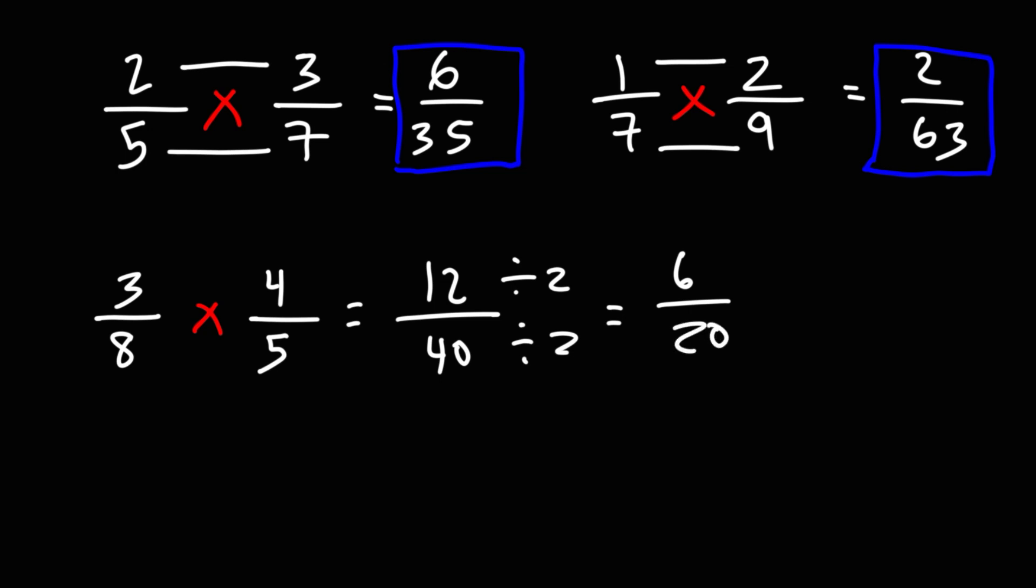Now, we still have even numbers, so we could reduce it by, we could divide it by 2 again. 6 divided by 2 is 3. 20 divided by 2 is 10. So the final answer for this example is 3 over 10.